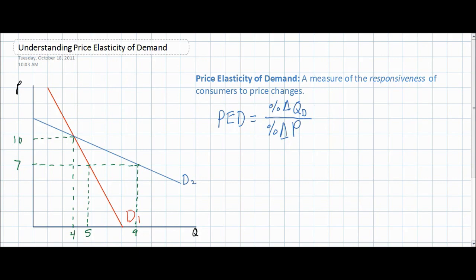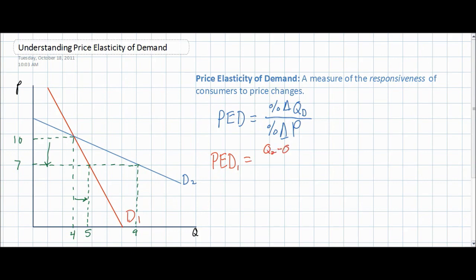First let's look at what happens when the price falls from $10 to $7 for the good represented by D1. We notice that as the price falls from $10 to $7, the quantity demanded increases from 4 units to 5 units. To calculate the price elasticity of demand, we can plug these numbers into our PED formula. First we must calculate the percentage change in quantity and the percentage change in price. The formula for percentage change in quantity is Q2 minus Q1 divided by the original quantity Q1.